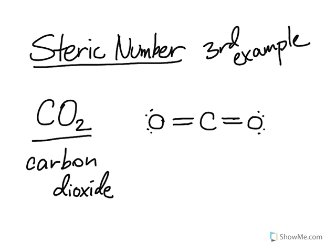Alright, well, carbon again is the central atom. So let's count the number of bonding areas around it. Now you may say that a double bond right here and another double bond right there would actually be a total of four bonding areas. In fact, that's incorrect.